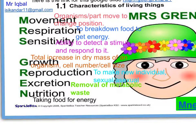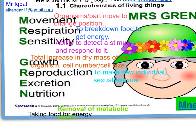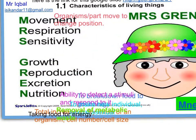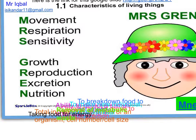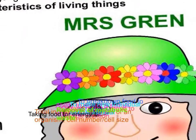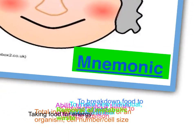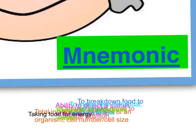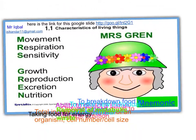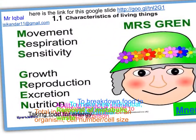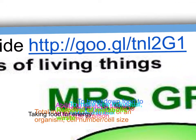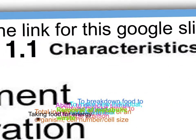To remember all these characteristics, there are two main things: first, know all seven characteristics, and second, be able to describe each one. Use the mnemonic MRS GRANT or develop your own. I've put all this information for Chapter 1 in a Google Slide — the link is available so you can access the whole slide.